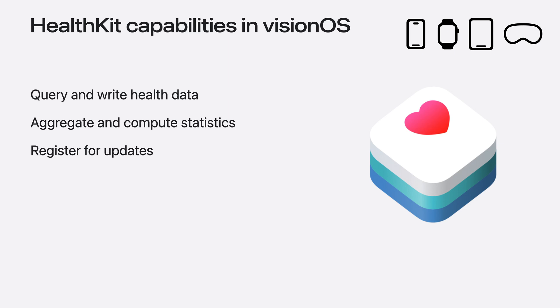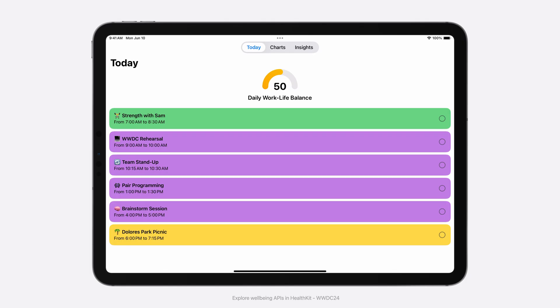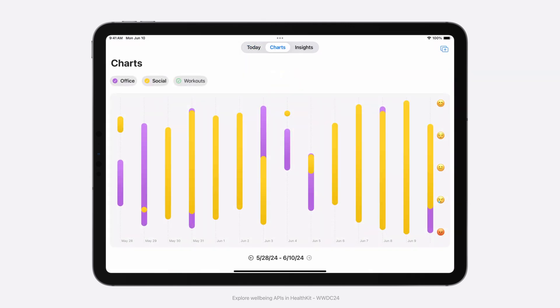HealthKit in Vision OS behaves very similarly as in iPadOS. Your app can read and write data, compute statistics, as well as register for updates. As on other platforms, the user can view and edit each app's authorization to health data in the Settings app, and users can have their data sync between their devices periodically through iCloud. HealthKit in Vision OS is available for apps using the Vision OS SDK and iPadOS apps compiled against iOS 17 or later. For today's session, we've been working on an app that lets you log emotions corresponding to calendar events using the new HealthKit State of Mind API.